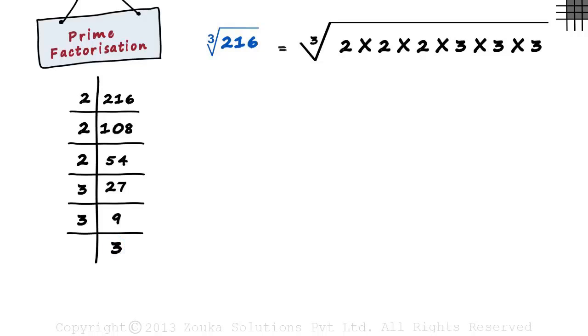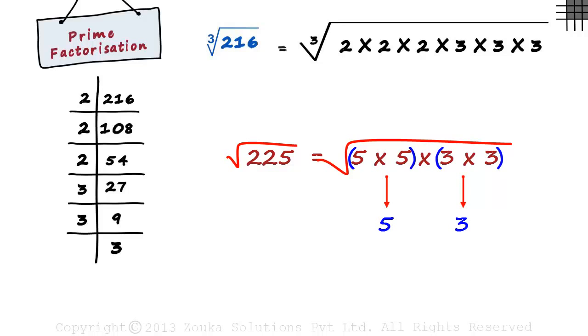So what do we do now? If you remember correctly, in squares, we made pairs of same numbers and chose one from each group. In cubes, we make groups of three same numbers and again choose one from each group.